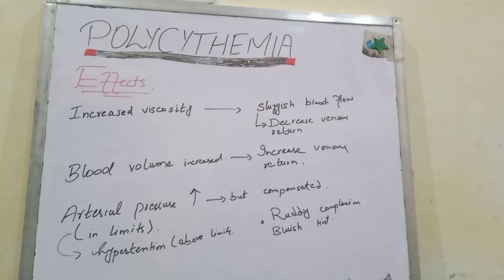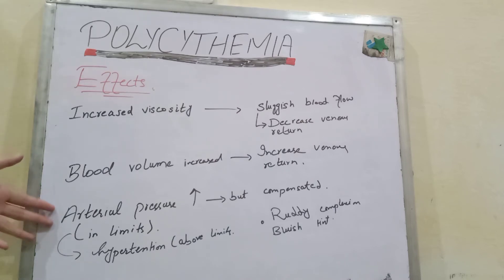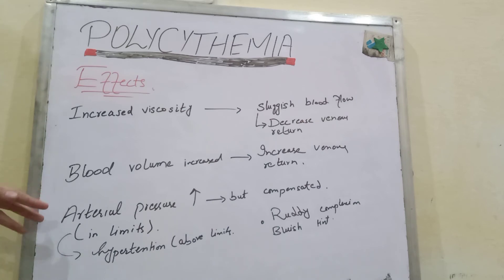There will not be as much effect of polycythemia on overall circulation, because the two effects neutralize each other. However, because there is large blood volume, arterial pressure can rise. The blood pressure compensatory mechanism usually offsets this and returns it to normal value if the arterial pressure rises within limits. But if arterial pressure rises limitlessly, this can lead to hypertension.